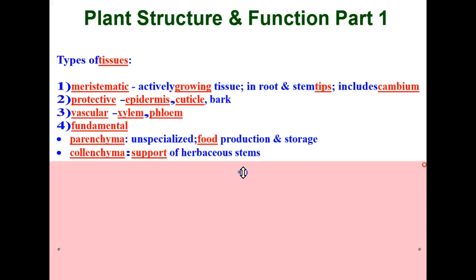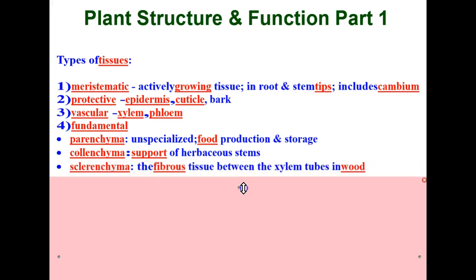We have the collenchyma, which is the support of herbaceous stems. We have the sclerenchyma, which is the fibrous tissue between the xylem tubes in wood. So these are all different types of tissues that you'll see labeled in different structures of plants.